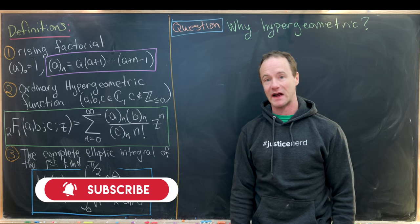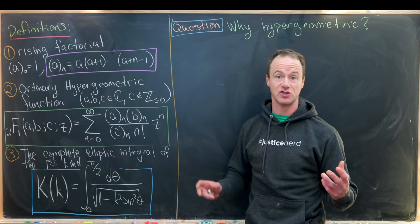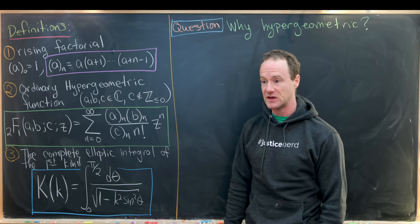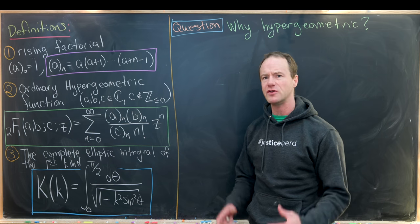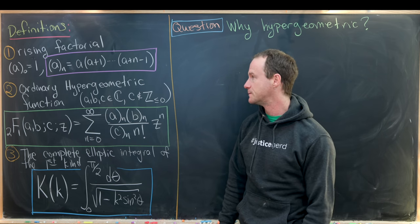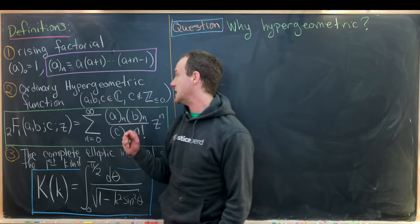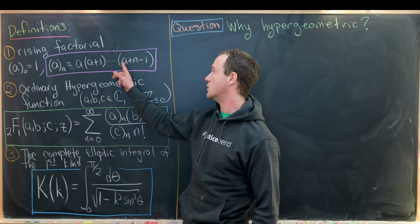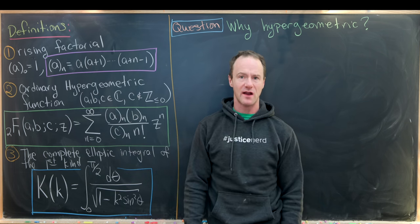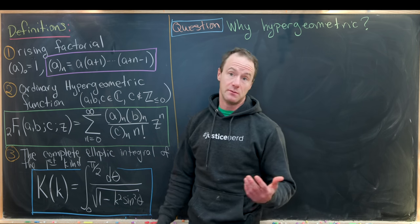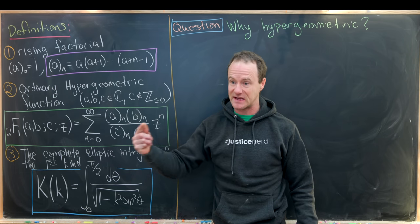The first thing that we need is the rising factorial. This looks a lot like the notation used for the Pochhammer symbol from the number theory of Ramanujan, although it's a slightly different object. It's defined for any complex number a. The parentheses a zero is defined to be the number one, and then a sub n is a times a plus one times a plus two, all the way up to a plus n minus one. There are n total terms in this product — that's why we think of it as a rising factorial.